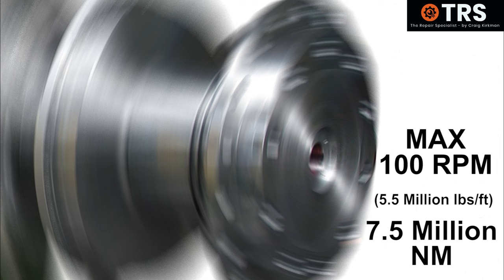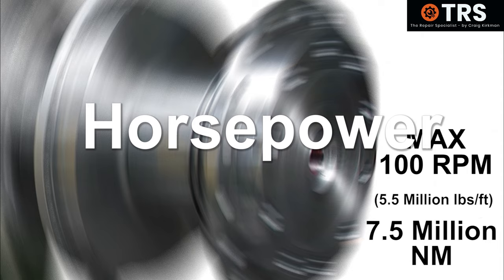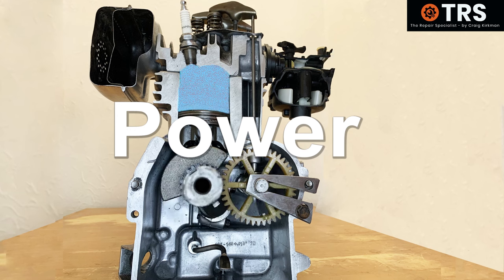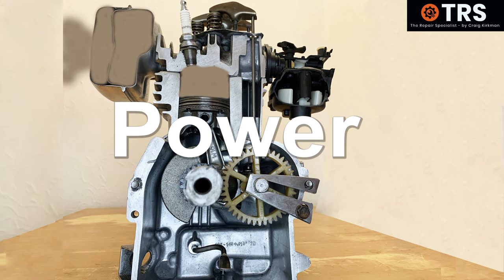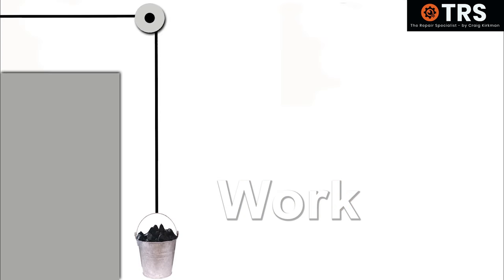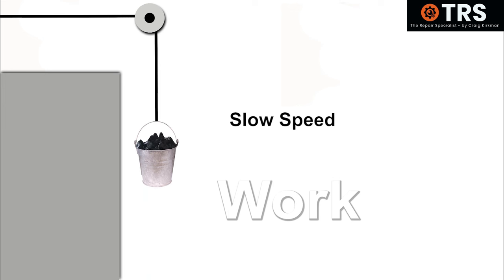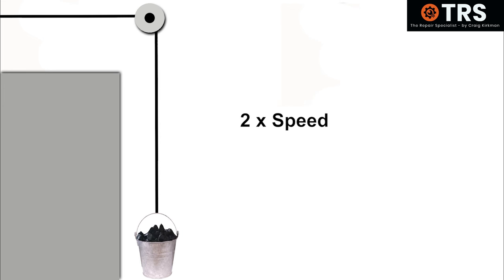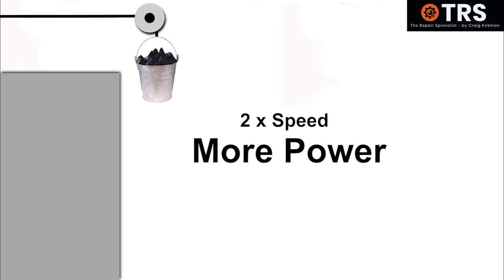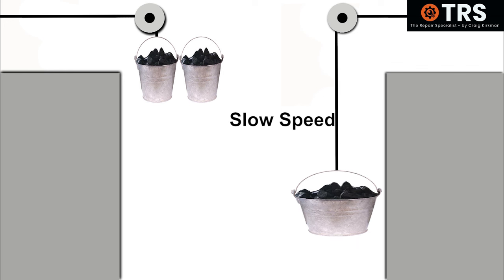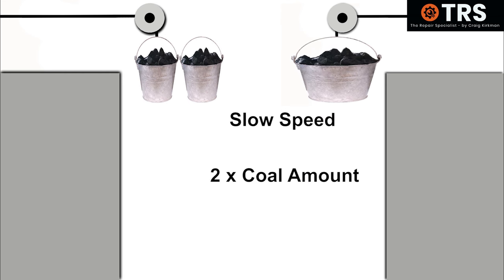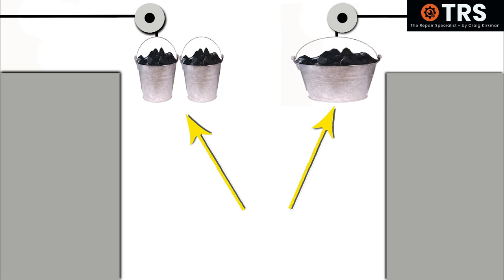So where does this all come in to explain the horsepower of an engine? Let's first look at what is meant by power. In our situation, power is the ability to do some work. If we were to pull a bucket full of coal up a mineshaft at a steady speed, compared to pulling the same bucket up at twice the speed, then at twice the speed this is more power — because we could potentially pull up two buckets of coal in the same amount of time, thus producing twice the coal. But if we pulled the coal up at the slow speed but with twice the amount of coal, we'd be producing the same amount of power in the same amount of time.